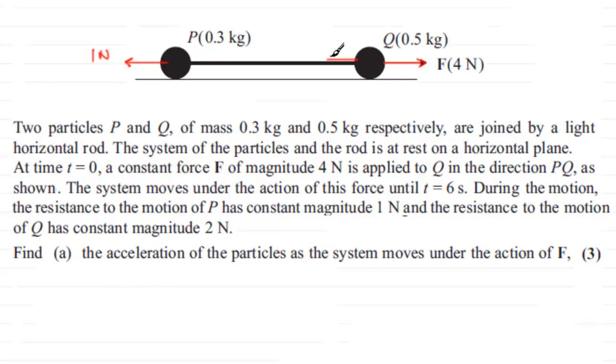Because the particles are connected by this light horizontal rod, there's going to be tensions acting in the rod. There's going to be a tension pulling P in this direction, T newtons, and there's going to be a tension equal and opposite to this one pulling back on Q, so I'll mark that there as T newtons. Later on we're going to have to find out what that tension is in part C of this question.